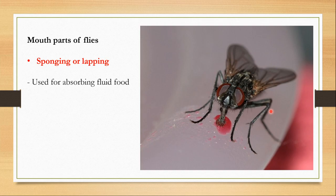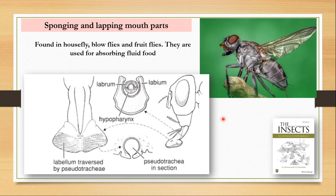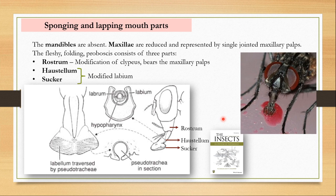The next type is the sponging or lapping type of mouthparts, found in other dipterans like flies, used for absorbing fluid food from a flat surface. Here the mandibles are absent because there is no chewing required. The maxillae are reduced and represented by a single jointed maxillary palp. They also have a proboscis which is a fleshy folding structure.